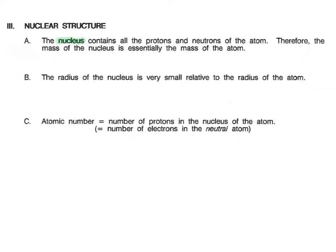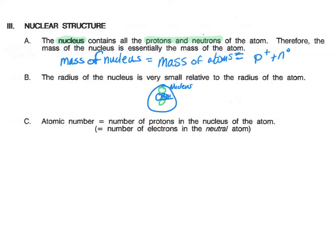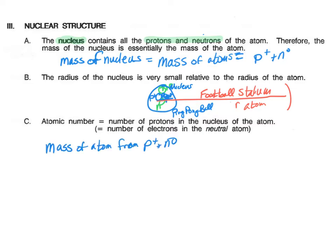We're going to look at the nuclear structure. The nuclear structure tells us that the nucleus contains all of the protons and the neutrons of the atom. Therefore, the mass of the nucleus is essentially equal to the mass of the atom. That is because the electrons are one two hundredth of an amu, and we discount them. On the other hand, when we look at the radius of the nucleus, we see that it is extremely small compared to the radius of the atom. To get an idea of the size, the nucleus might be the size of a ping pong ball, whereas the radius of the atom is probably the size of a football stadium, if the nucleus is a ping pong ball. What that tells us is that the mass of the atom is determined by the number of protons and the neutrons, but the size is determined by the space that the electrons occupy.